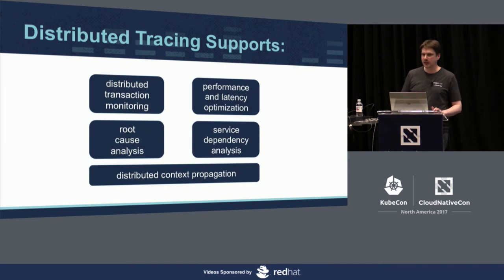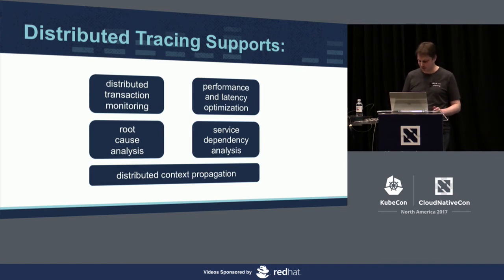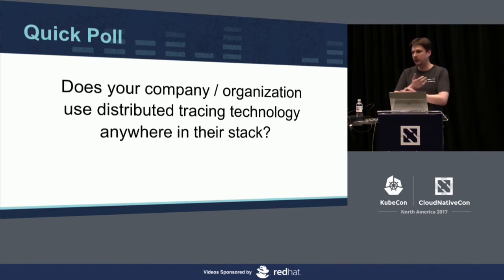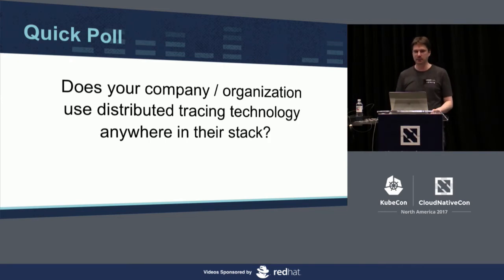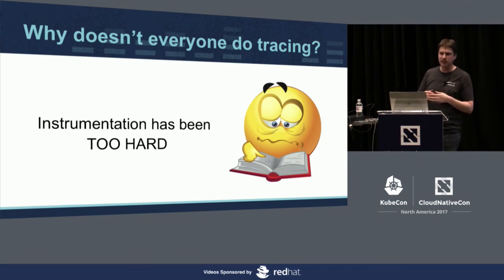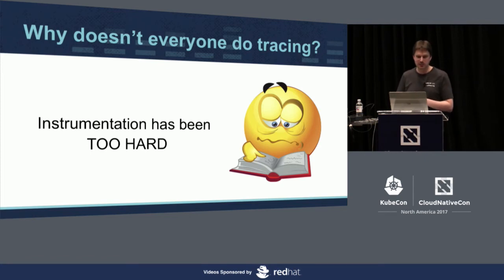Who likes tracing now? A quick poll: how many people in your organization have distributed tracing deployed and in use? That's a pretty good percentage, more than expected. If tracing is so useful, how come not everyone is using it? The question is a bit embarrassing for the industry: instrumentation has been too hard. With logging and metrics it's easier; with tracing it's a bit more work. Let me explain why.